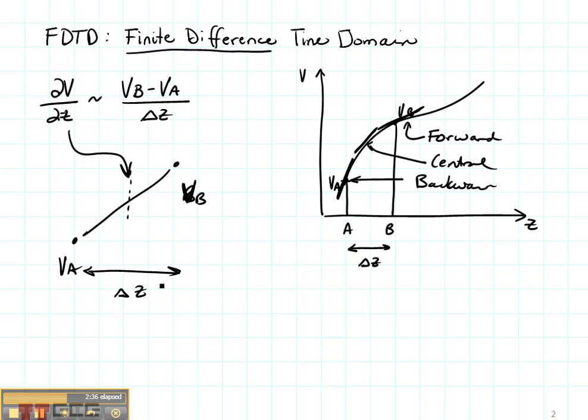We're going to use this finite difference idea to represent four derivatives in our telegrapher's equations. We're going to represent DV as a function of Z, the derivative of the current as a function of Z, the derivative of voltage as a function of time, and the derivative of current as a function of time.